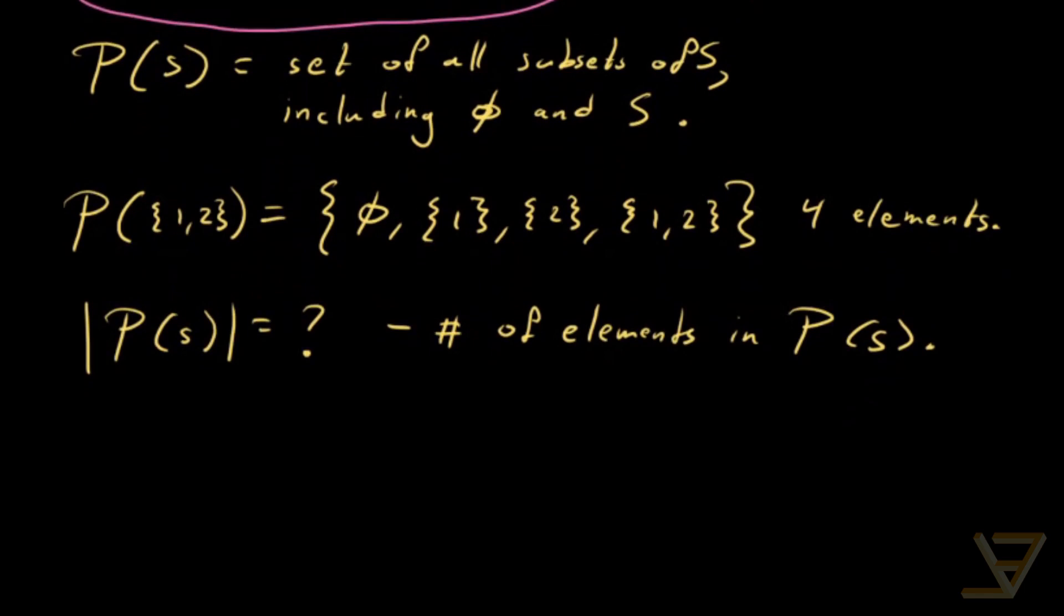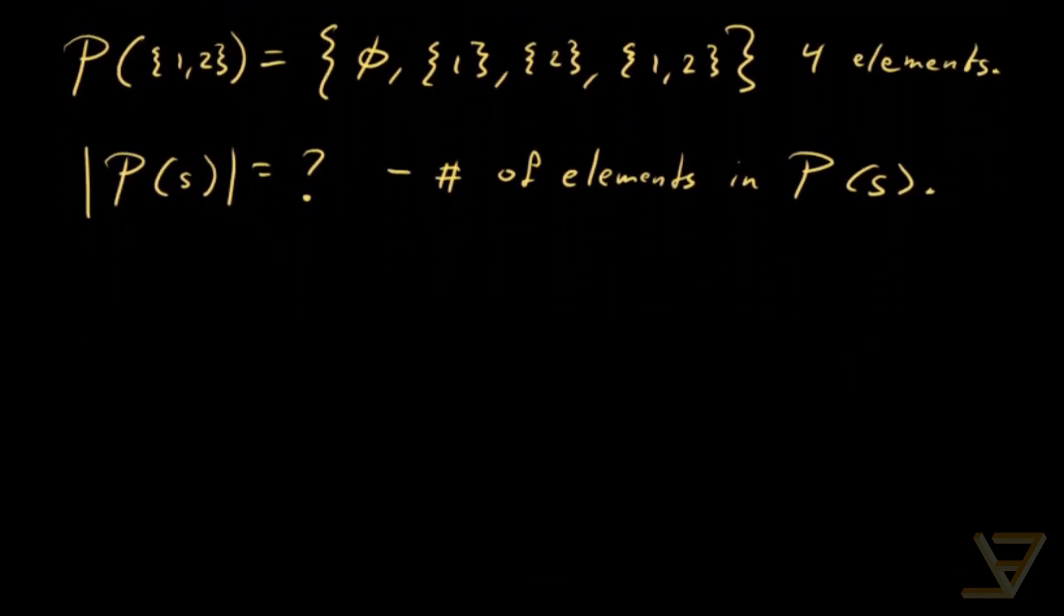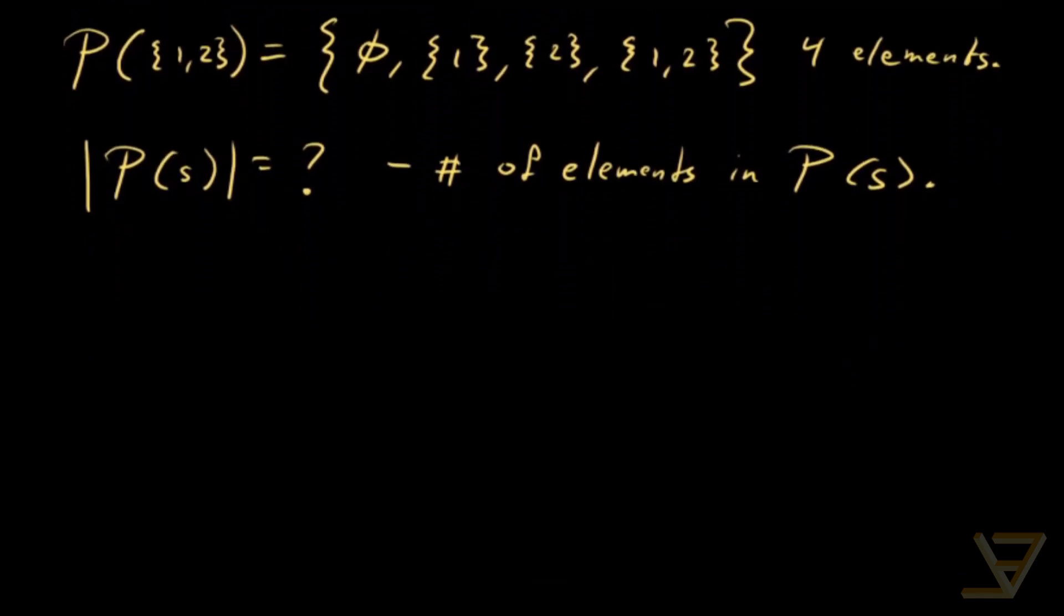We're going to use a pretty clever idea that involves using the bijection principle. So here's what we're going to do. We're going to map elements of P, the power set of S, into lists of length n. And these are going to be binary lists.